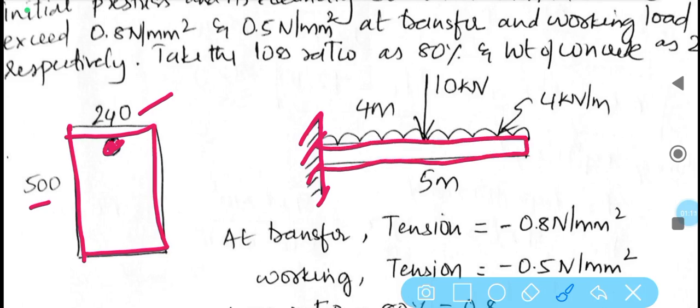It has one end fixed, the other end is free, and it is given that it carries a UDL load of 4 kN per meter throughout the length and a point load of 10 kN at 4 m distance from the fixed support.